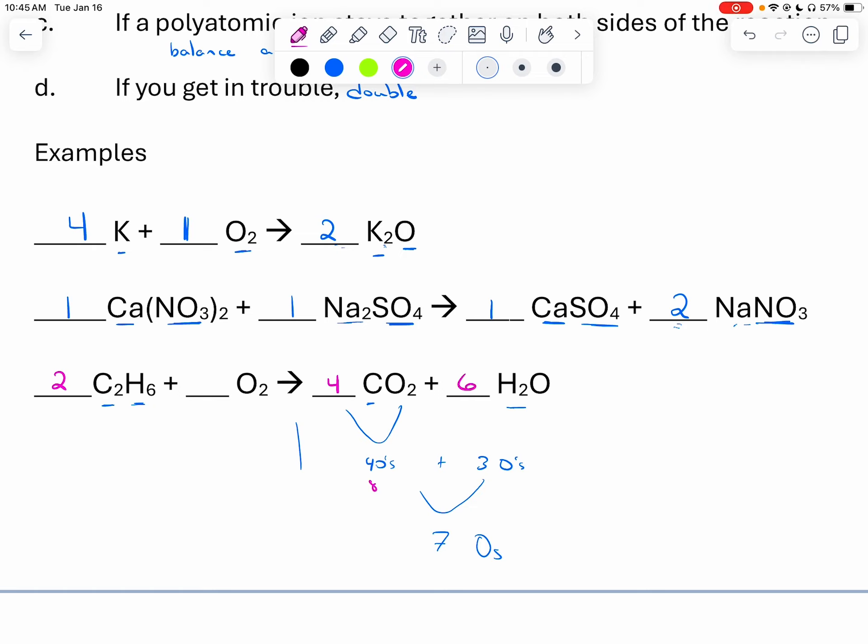Now if we look at our O's, we have eight and then we have six. Eight plus six is now fourteen. What times two gives me fourteen? Seven. Now let's just double check and make sure we can't go back and take a two or something out of all of these. Two, seven, four, six. There's no number that goes into all of those. So we are balanced.